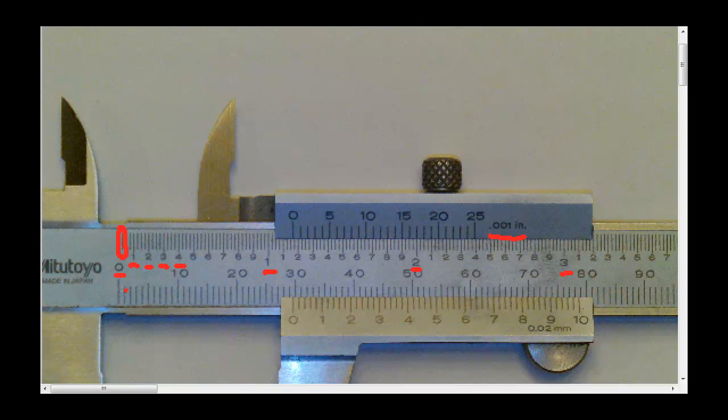So what we need to do is have a look down the main scale in relationship to the 0 on the movable scale or the vernier scale.